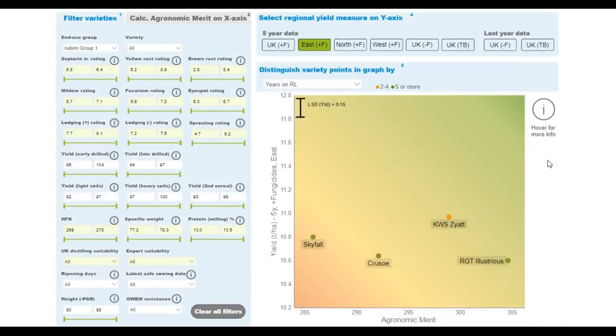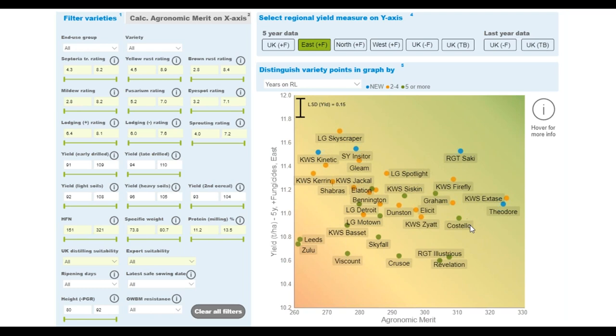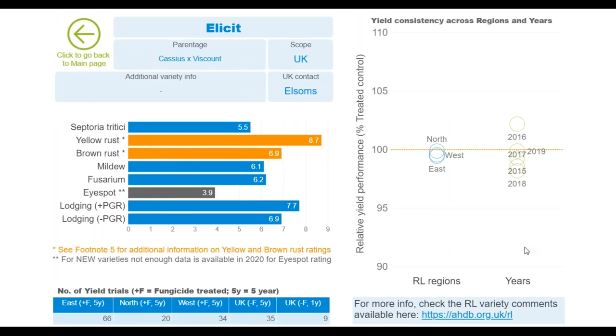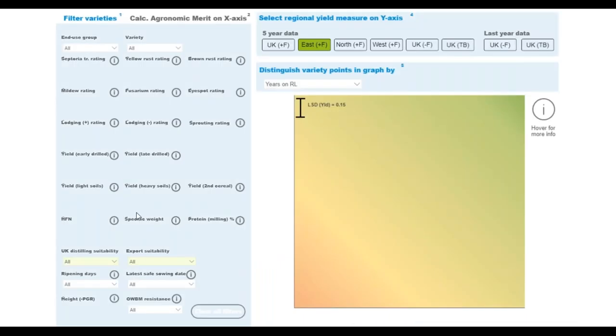What I wanted to do was create a visualization that shows how consistent a variety is for two dimensions. One is for the regions, and the other one is in years. Sometimes farmers say, I don't necessarily want the best performing variety. I want the variety that performs consistently. And this graph should show you if that's happening. In this case, we're looking at Zyatt. We see that there's some variation across years. And we see that there's a little variation across regions.